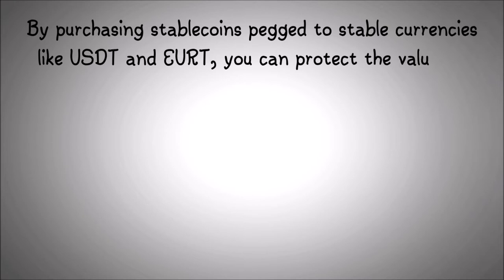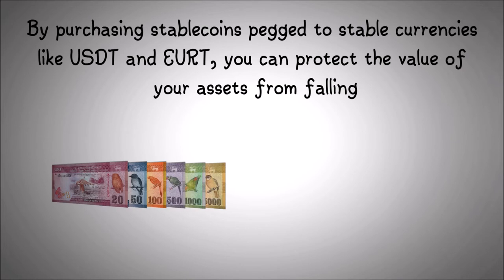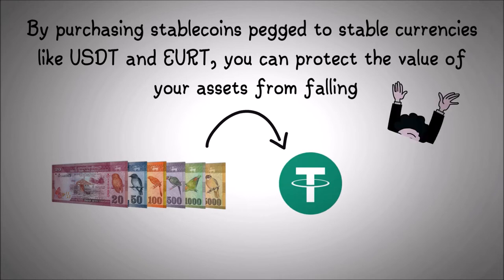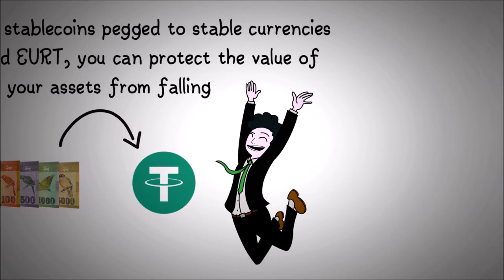By purchasing stablecoins pegged to stable currencies like USDT and EURT, you can protect the value of your assets from falling. If you convert your wealth from a failed economy's currencies to one of the strong fiat-pegged stablecoins, you could escape the nightmare of hyperinflation.